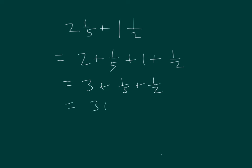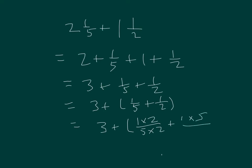We can also add 1 fifth and 1 half first by finding like units. We need to rename the fractions — we're going to rename them into tenths. So we get 3 plus 2 tenths plus 5 tenths.